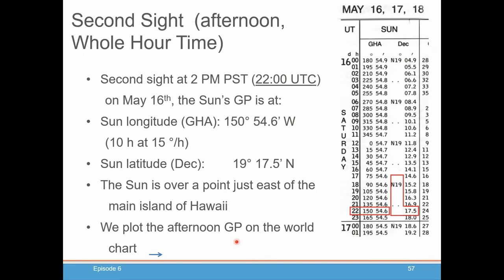So then later in the afternoon, again, we're going to use whole hour times. We take our second sight at 2 p.m. Pacific Standard Time, which is 2,200 hours UTC. And what we find is that the sun has moved, I hope it's moved, to 150 degrees, 54.6 minutes. And its latitude is pretty much the same, north 19 degrees, 17.5 minutes. In that position, if you, again, pull out your globe or your almanac, your atlas, and you take a look to see where that is, that's around Hawaii. So in a few hours' time, the sun has moved from being over Cuba to being over Hawaii. So we will now plot the afternoon GP of the sun on our chart.